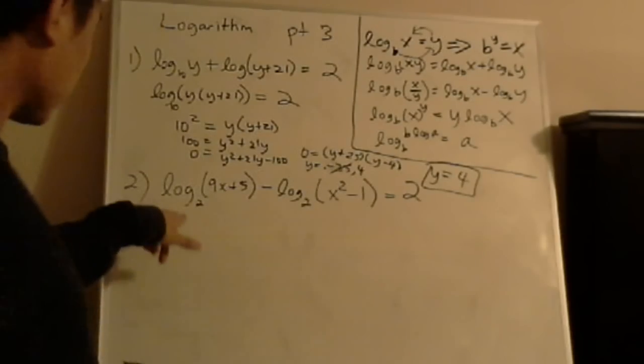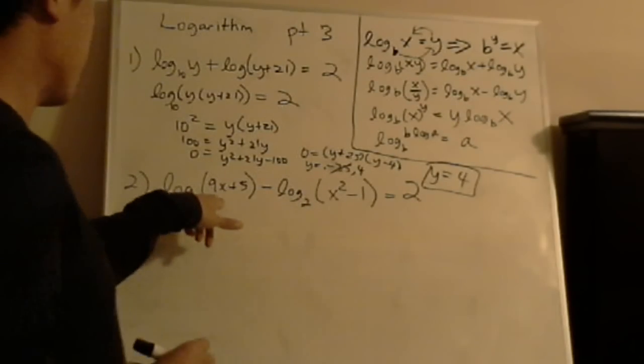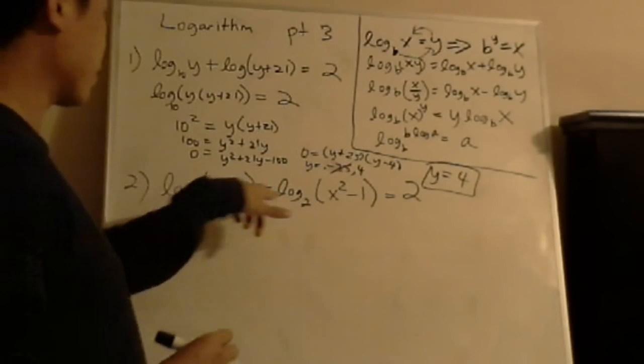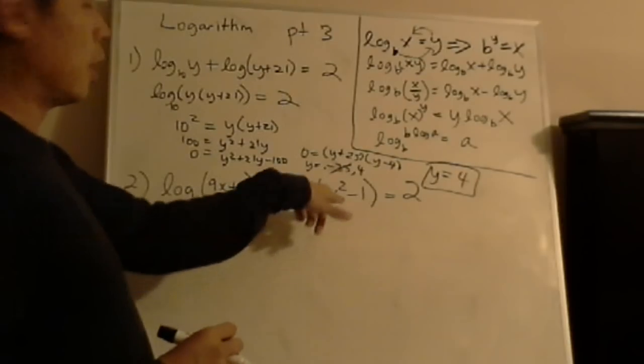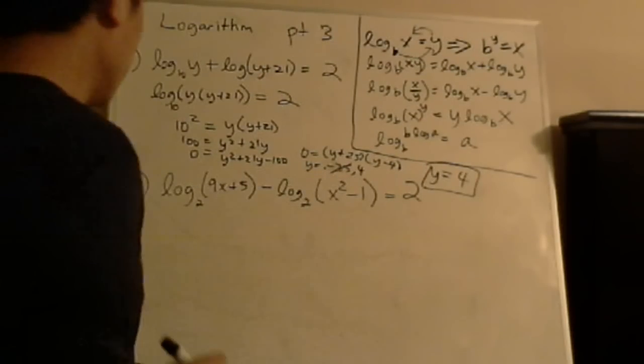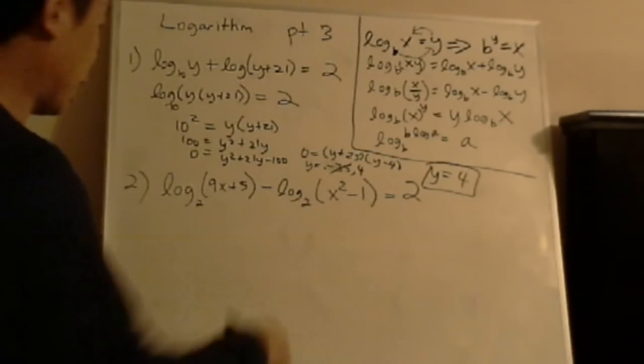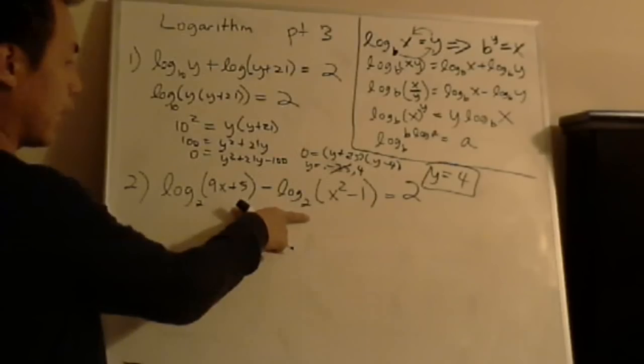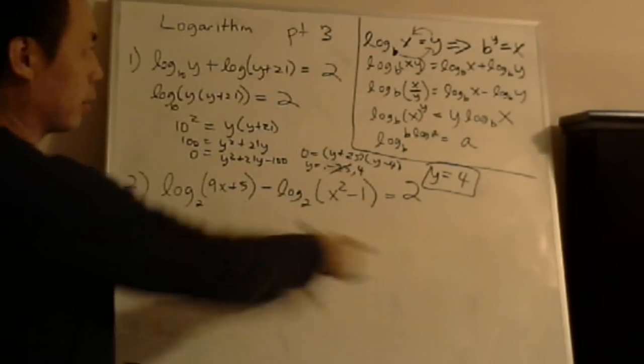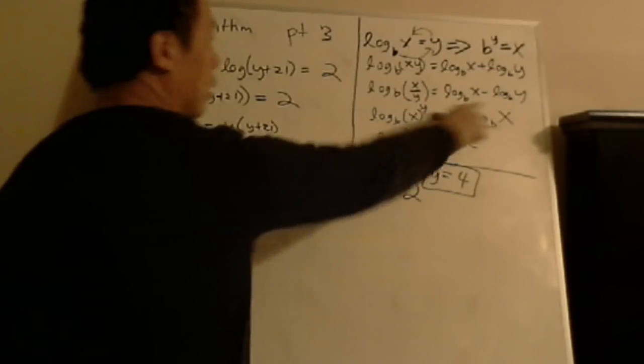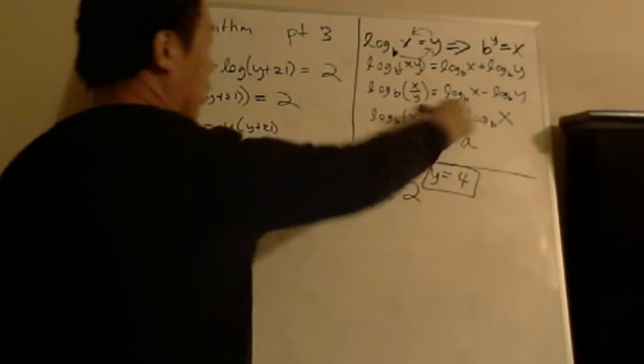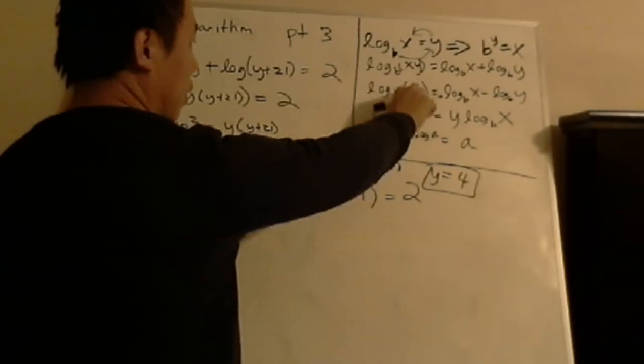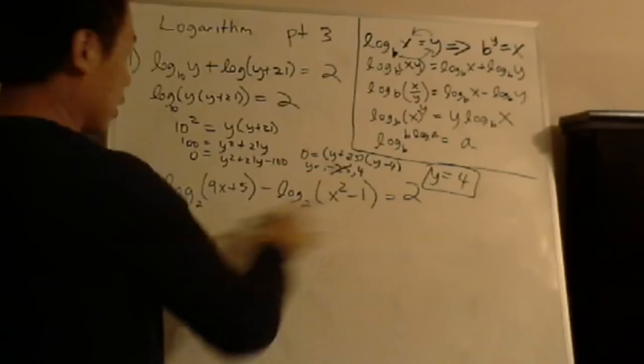So we go to the next problem. Log base 2 of 9x plus 5 minus log base 2 of x squared minus 1 equals 2. So first thing you do, you recognize the logs right now are a difference. Difference of logs. So you go to this one, difference of logs. And what do you do when it's difference of logs? It goes back to here. You're dividing the x and the y. So you're dividing these two.